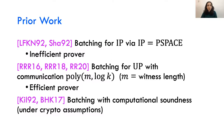Let me briefly mention some prior work. Using the IP equals PSPACE theorem, we can get batching for every problem in IP, but with an inefficient prover. Also, the line of work of Rottenblum, Rottenblum, and Reingold showed batching for UP — a specific subclass of NP — with communication of poly(m log k), where m is the witness length, with an efficient prover. There is more work showing batching with only computational soundness and under cryptographic assumptions, where the communication complexity is only poly(log n · log k).